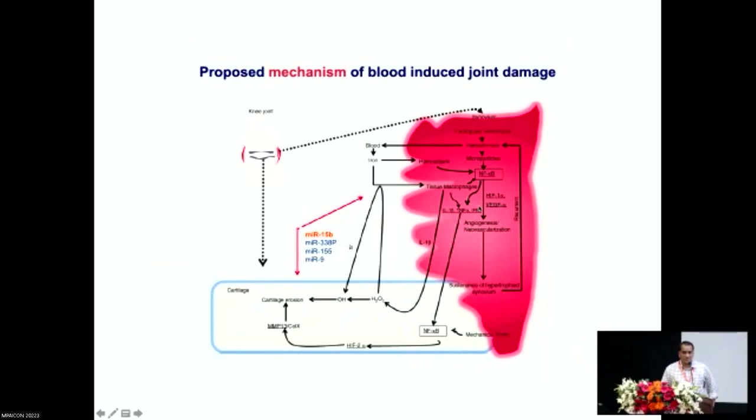This leads to angiogenesis and neovascularization, and these vessels are very friable — they break easily — leading to more bleeding. So this creates a vicious cycle of bleeding, pro-inflammation, angiogenesis, and bleeding. Over a period of time, if this situation persists, it leads to generation of matrix metalloproteinases within the articular cartilage, leading to cartilage degeneration.